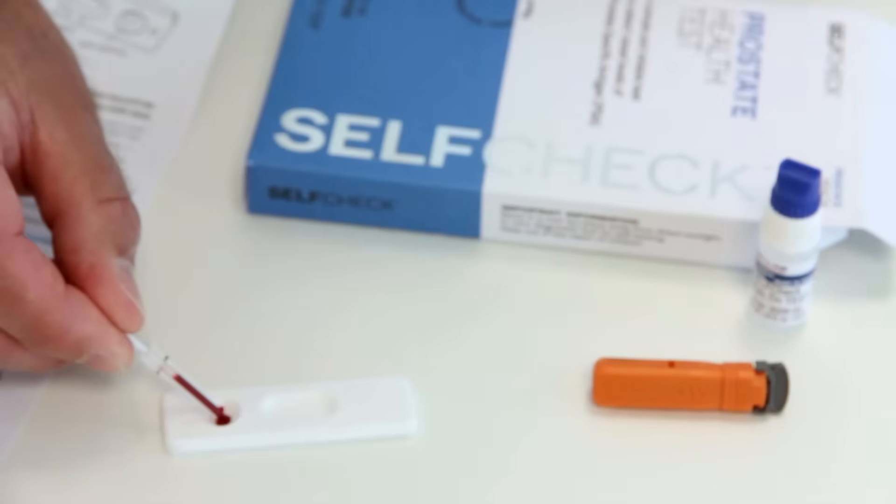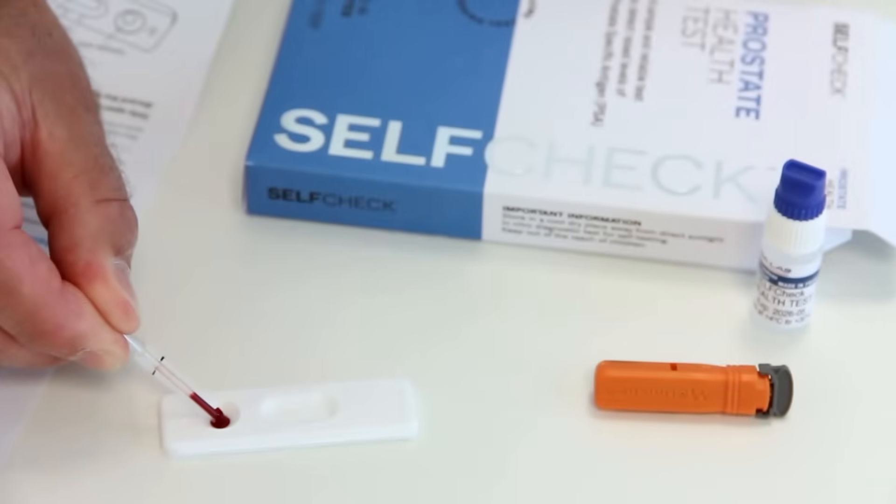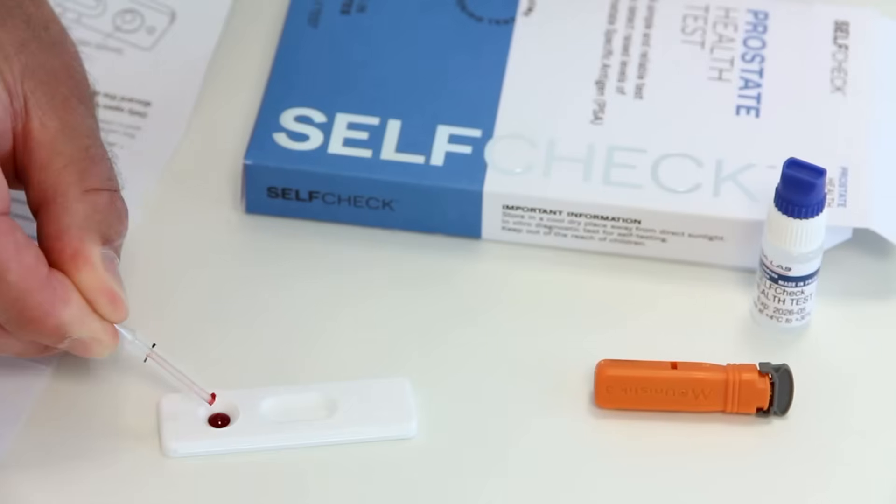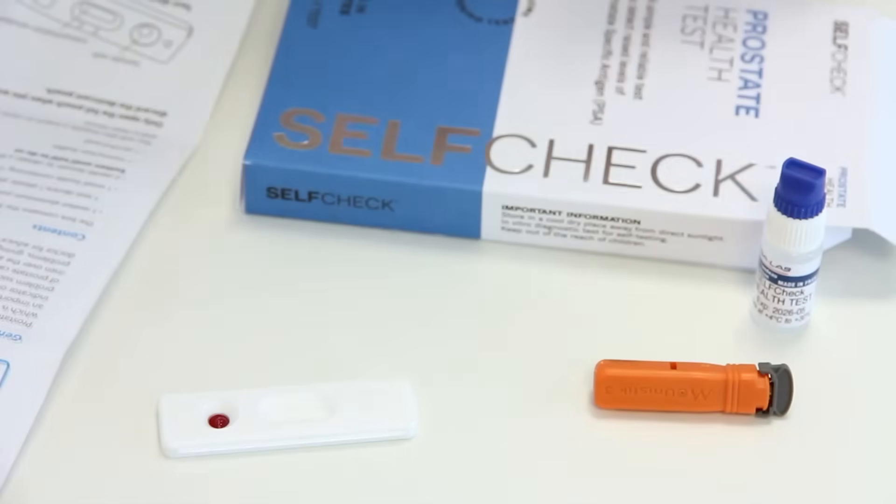Add the blood to the sample well of the test cassette by pressing the pipette bulb. Try to avoid air bubbles. Leave the blood to soak in for 30 to 40 seconds.